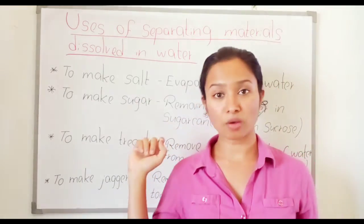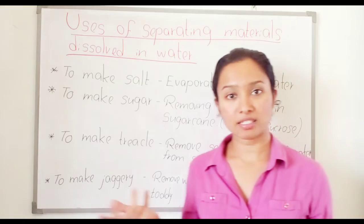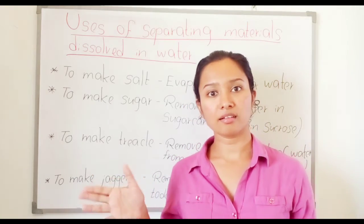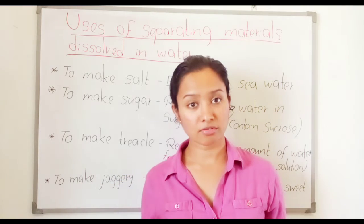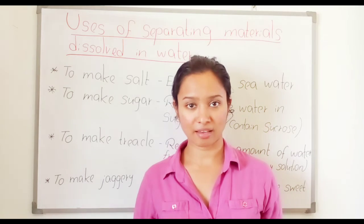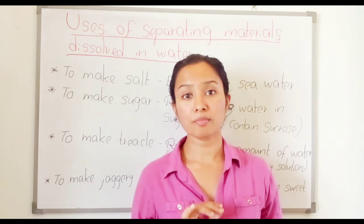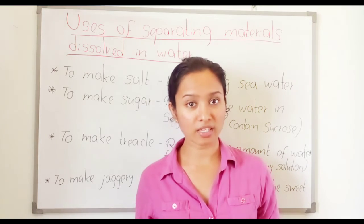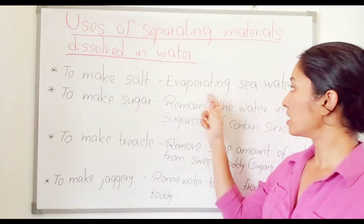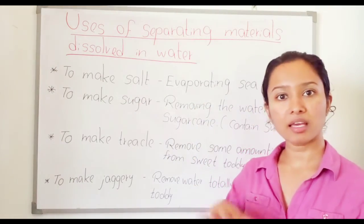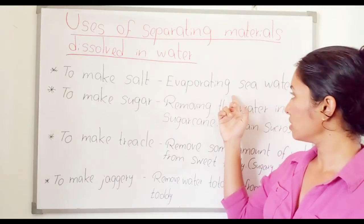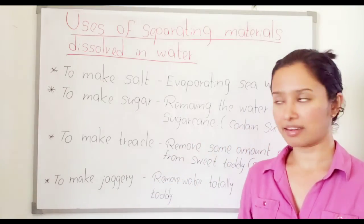To make salt: rivers, streams, and lakes all flow to the sea. The most common salt in water is sodium chloride. We can evaporate sea water by exposing it to sunlight, and in this way we can separate salt from sea water.